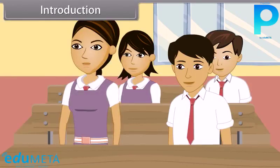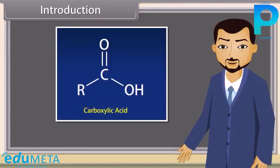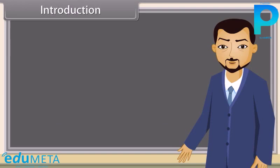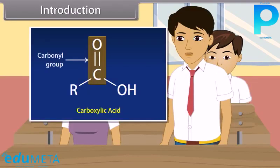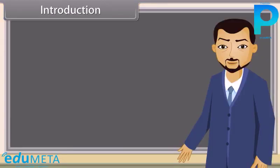Teacher, what are carboxylic acids? Carboxylic acids are the organic compounds which contain a carboxyl group. Now, who will tell me what is carboxyl group? Carboxyl group consists of carbonyl group and hydroxyl group. Very good, Ramesh. In this lesson, we will learn more about carboxylic acids.